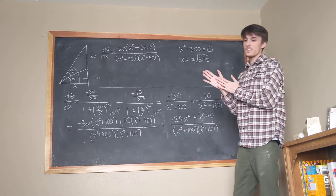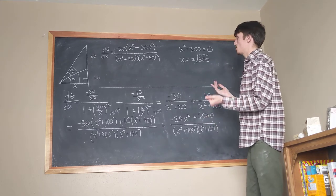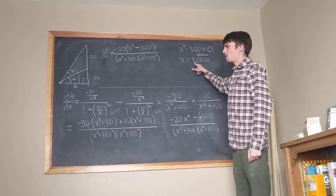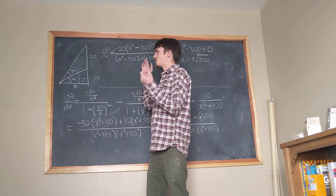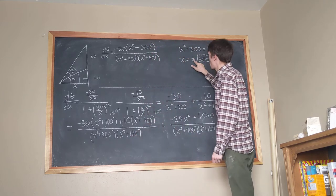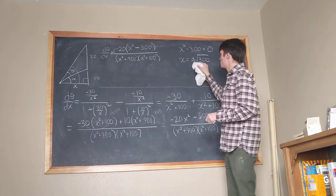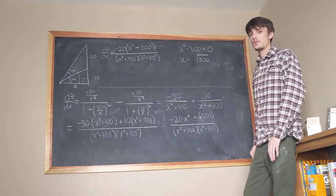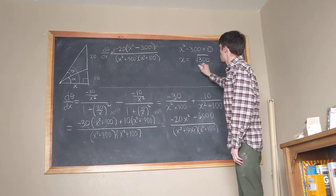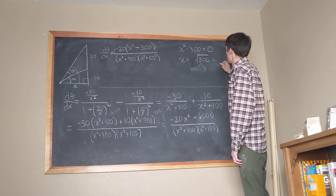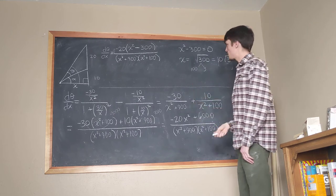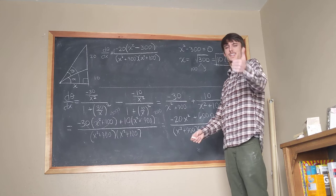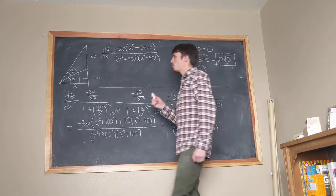Solving x² = 300 gives x equals plus or minus the square root of 300. The negative solution would imply sitting behind the screen, which isn't physically valid. So we take the positive solution: x equals √300, which simplifies to 10√3 feet.